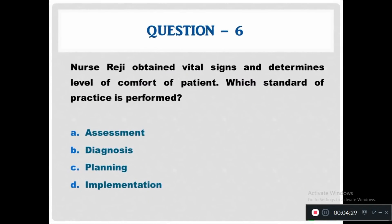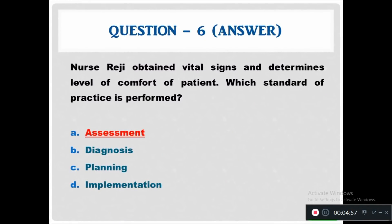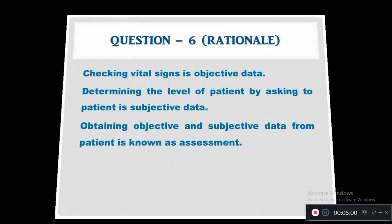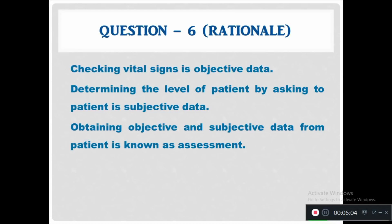Question 6: Nurse Regi obtained vital signs and determined the level of comfort of the patient. Which standard of practice is being performed? Option A: assessment. Option B: diagnosis. Option C: planning. Option D: implementation. The right answer is assessment. The rationale: checking vital signs is objective data; determining the level of comfort by asking the patient is subjective data. Obtaining both objective and subjective data from a patient is known as assessment.